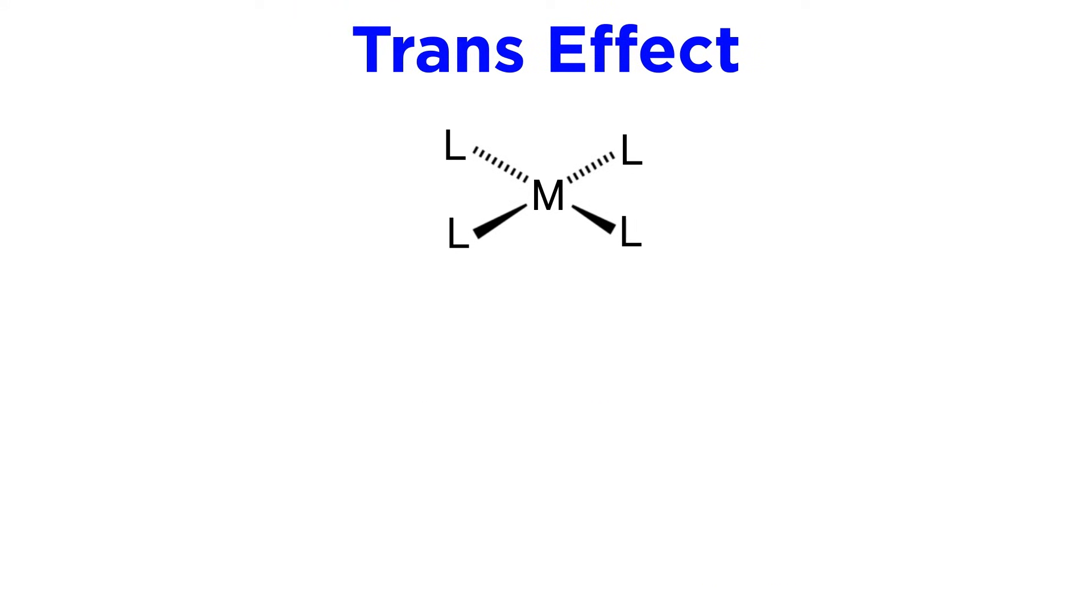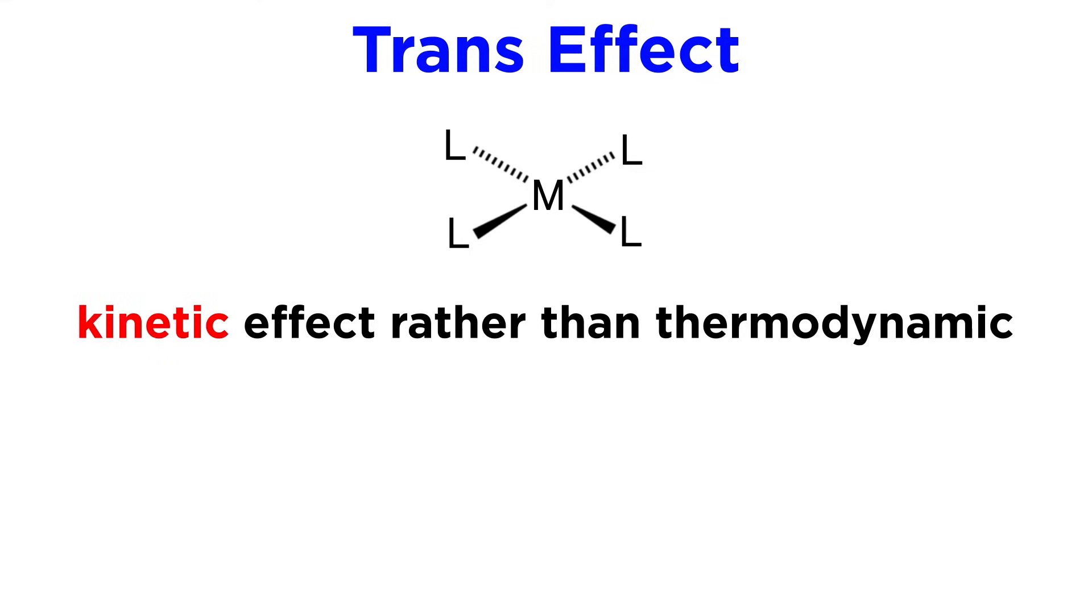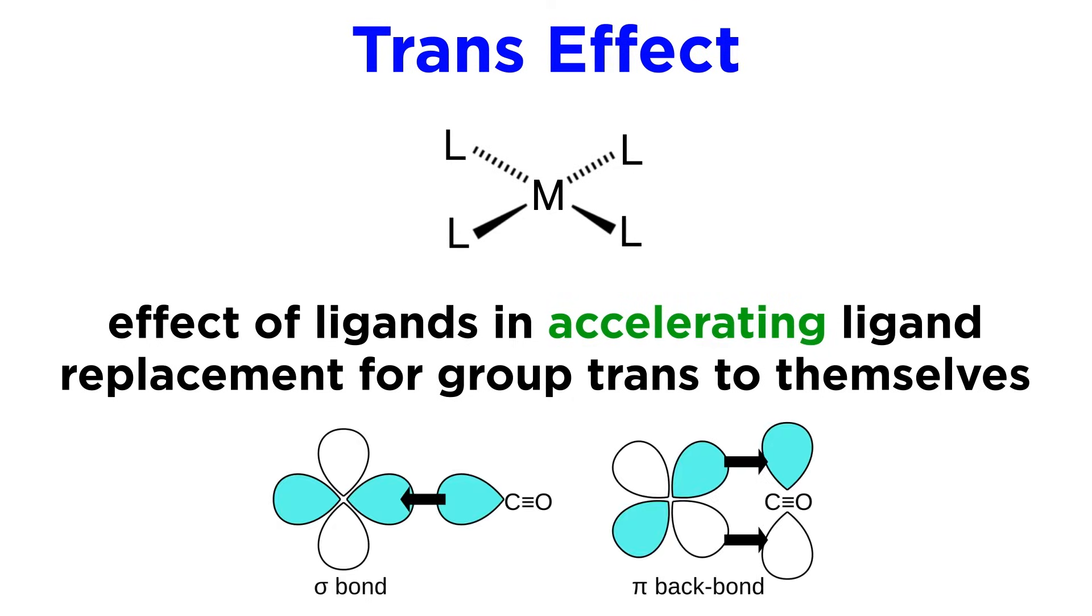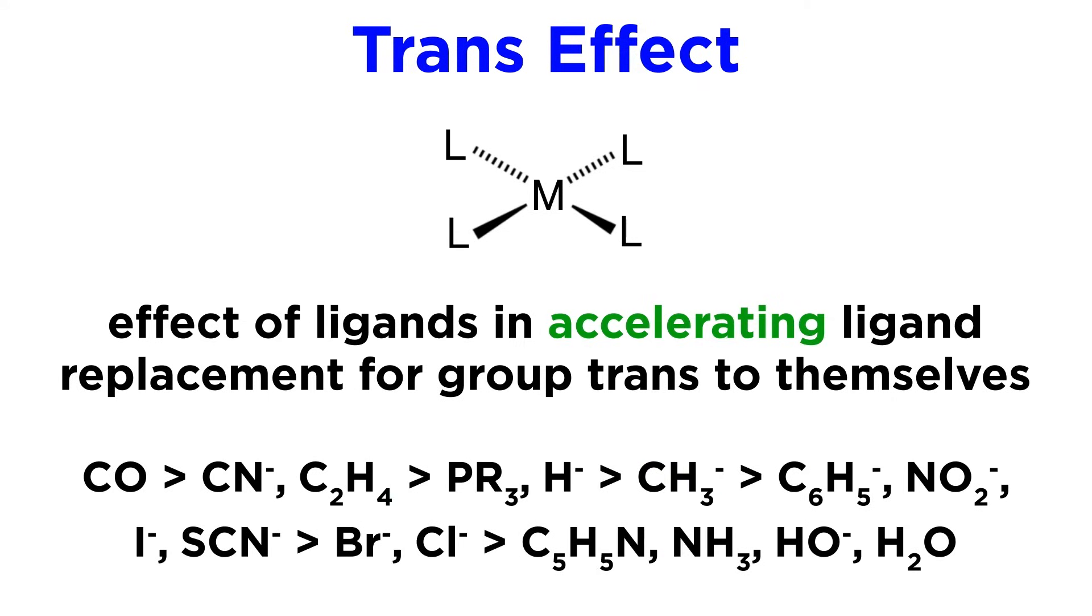Now, in determining which ligand will act as a leaving group in ligand exchange, we have to learn the trans-effect. This is similar to trans-influence, except we are not specifically looking at thermodynamics, but rather kinetics. The trans-effect is the effect of other ligands in accelerating the rate of ligand replacement of the group trans to themselves. The main difference is that it takes into account strong pi-bonding and backbond-accepting ligands, such as carbonyl and cyanide ligands. This will be the most important trend to memorize, so take a look at this.